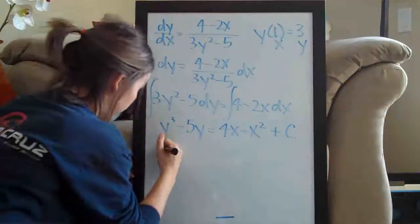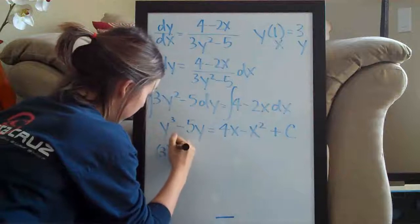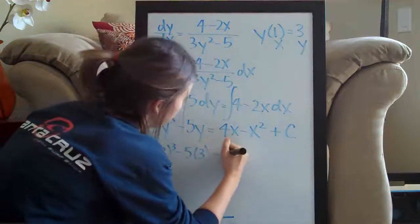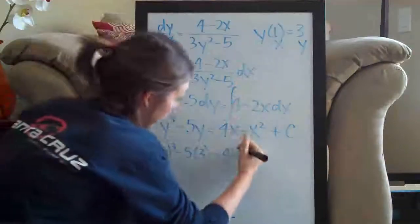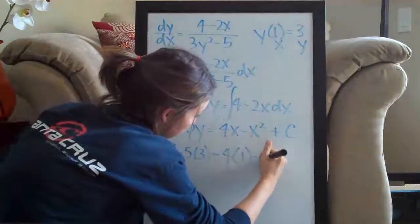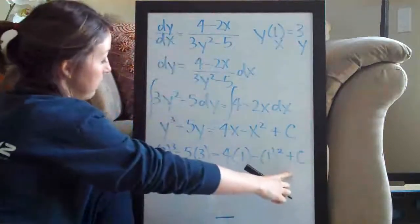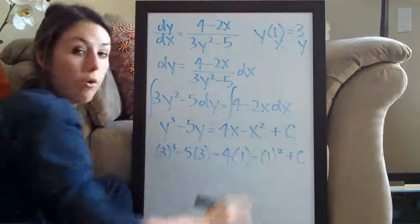We're plugging in 3 for y so we're going to have 3 cubed minus 5 times 3 equals 4, and then we're plugging in 1 for x times 1 minus 1 squared plus c. The reason we're plugging in these variables is because we want to solve for c.